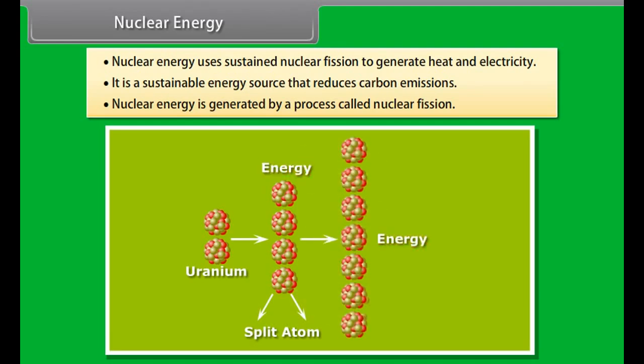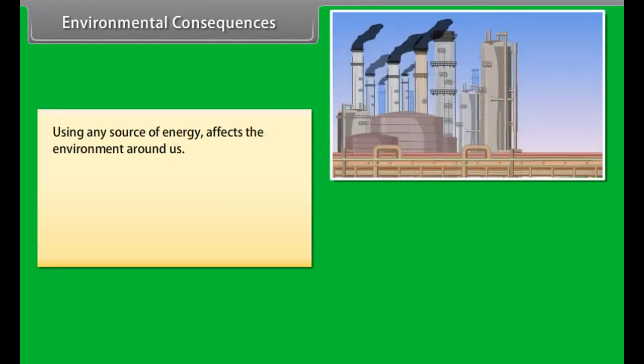The Earth receives 174 petawatts of solar radiation at the upper atmosphere. Approximately 30% is reflected back to space while the remaining 70% is absorbed by clouds, oceans, and land masses.